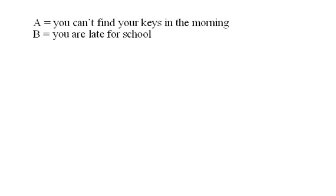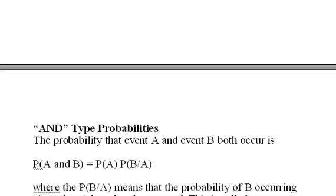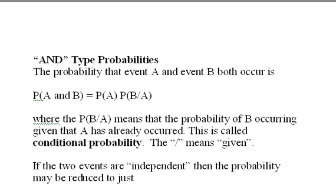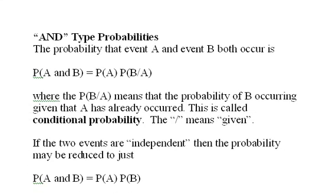And here we get to the AND-type probabilities. The probability that event A and event B both occur is P(A and B) = P(A) P(B|A), where the P(B|A) means the probability of B occurring given that A has already occurred.